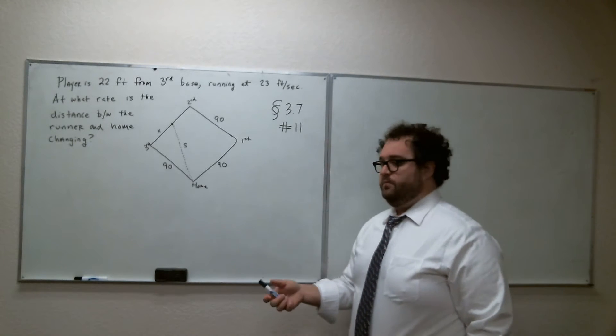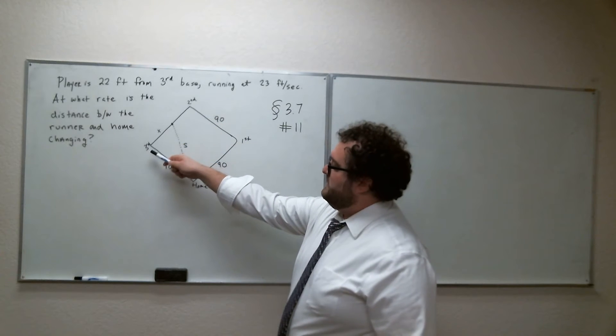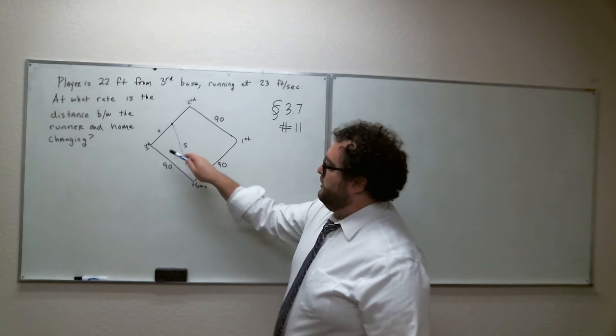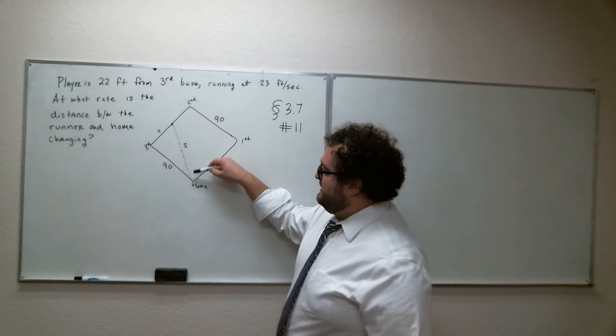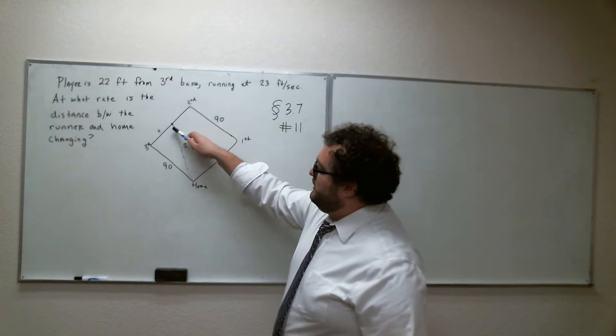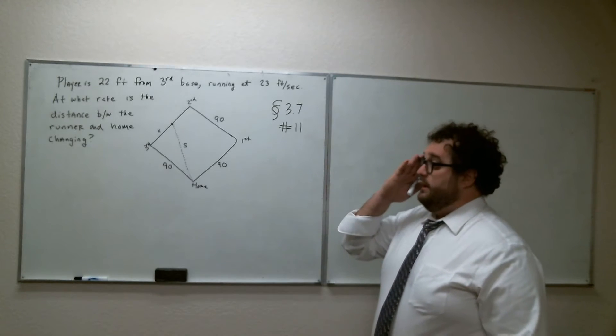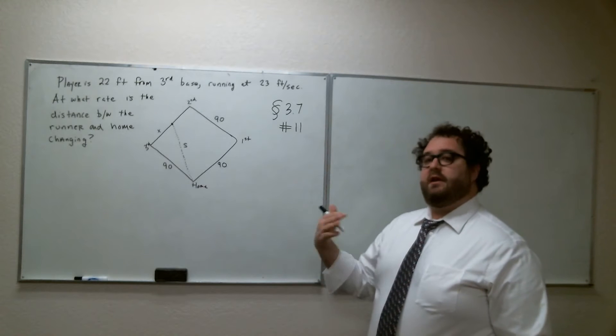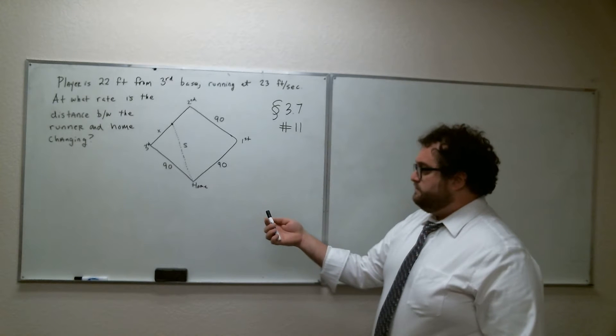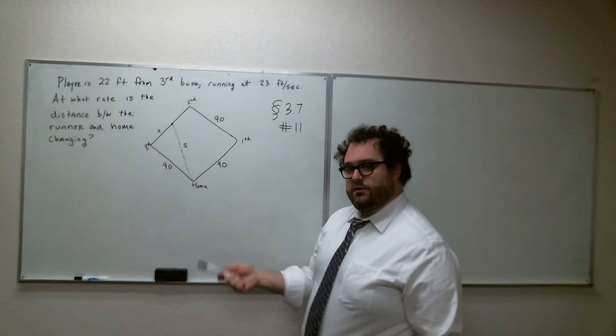So clearly, as the runner runs from second base to third base, we can depict a right triangle here, and the distance S is the hypotenuse of that right triangle, and that hypotenuse is shrinking as the runner gets closer and closer to third base. So as with a lot of these related rates problems, the Pythagorean theorem pops up. Again, we have a right triangle, and we are trying to figure out how fast S, the hypotenuse here, is changing.